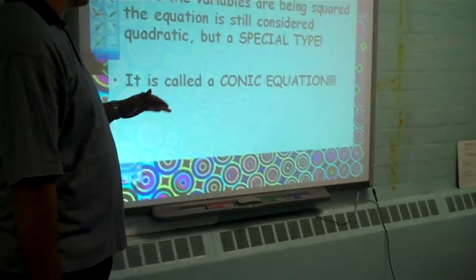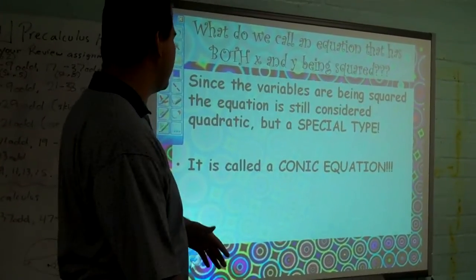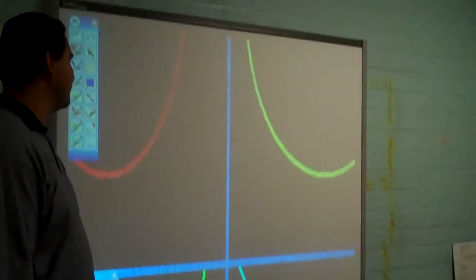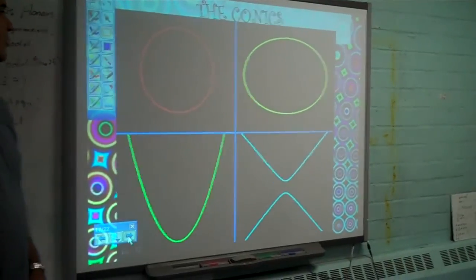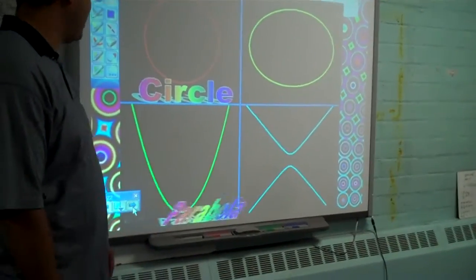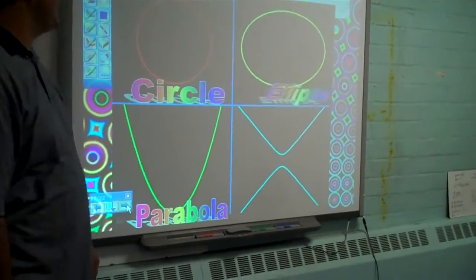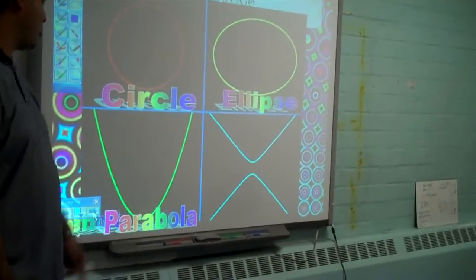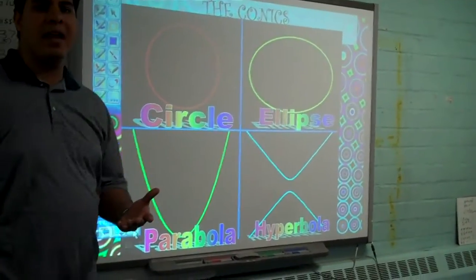The reason why is because all of the shapes are in some way a cross section of a cone. For example, the conics are the following. Those are your four conics. Circles, ovals. The ovals aren't called ovals, they are called ellipses. And the one at the bottom is called a hyperbola. They are all cross sections of a cone.